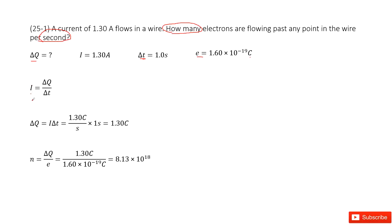We can use the definition that current equals the change in charge divided by time: I = ΔQ/Δt. From this equation, you can rearrange to get ΔQ = I × Δt.